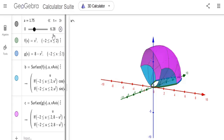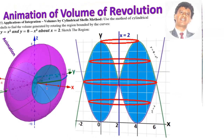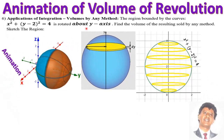That was the second animation. The next animation is again a volume of revolution. The region bounded by the curve x squared plus (y minus 2) squared equals 4 is rotated about the y-axis. This is a circle centered at (0, 2) with radius 2, and when you rotate it around the y-axis you obtain a sphere.